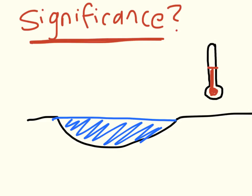What's the significance of water's high specific heat? Well, a large body of water can absorb and store a huge amount of heat from the sun during the daytime and during the summer while only warming up a few degrees.